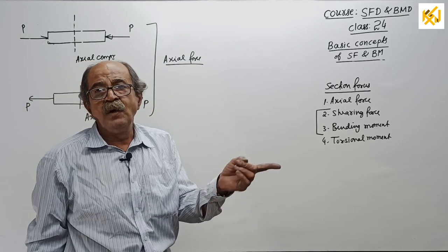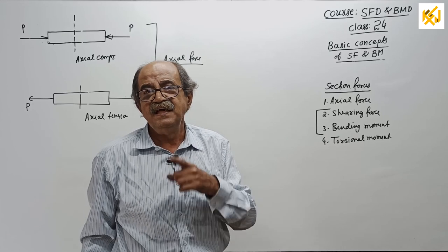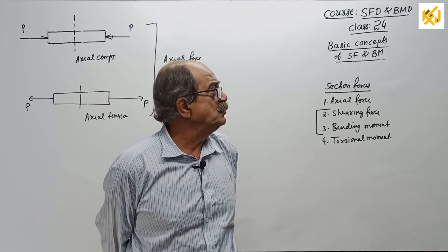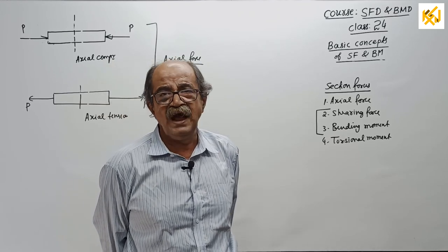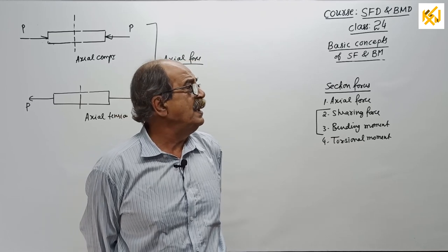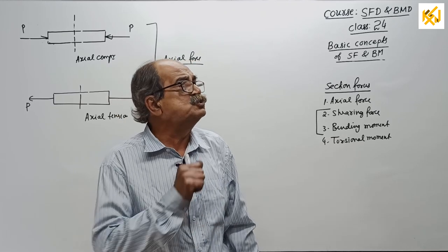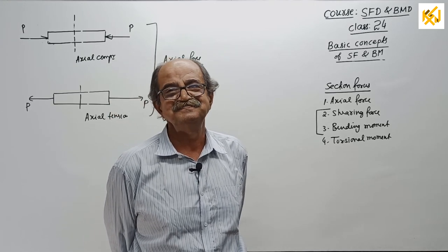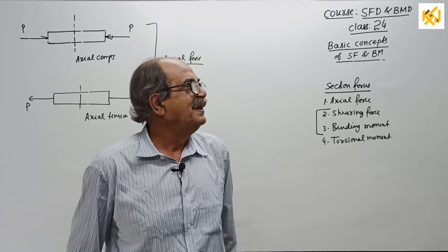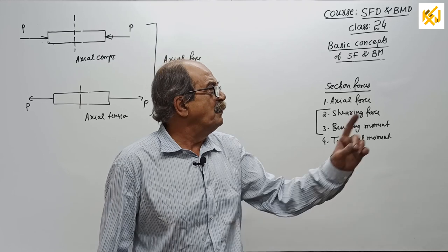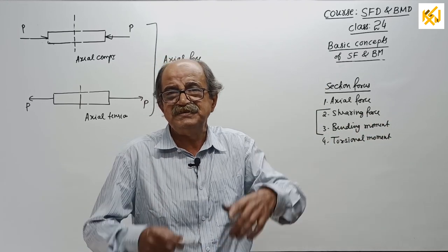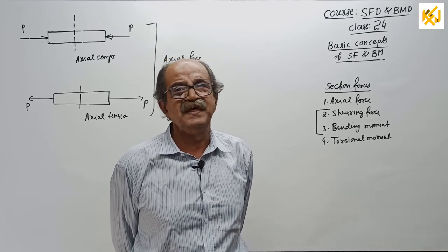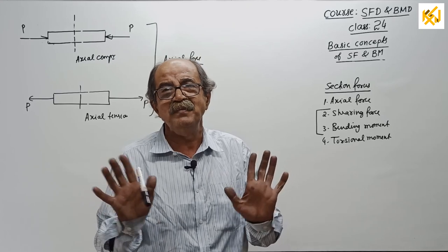Same direction on either side gives nonsense — it is not in equilibrium and will not create section force. Opposite direction on either side gives same nature. You will never get the case of same direction on either side when the member is in equilibrium.